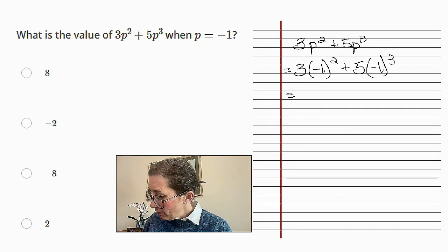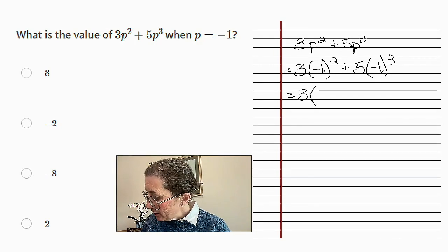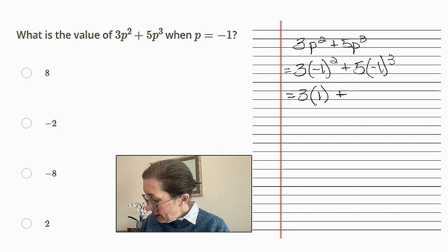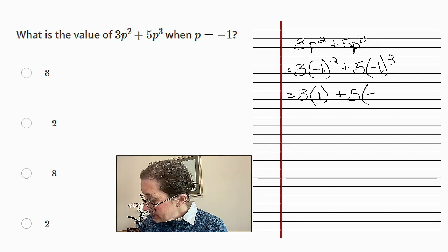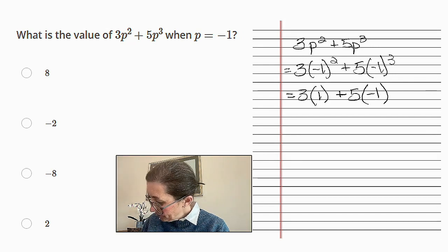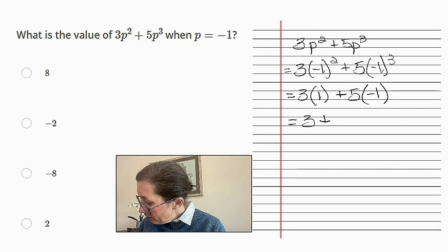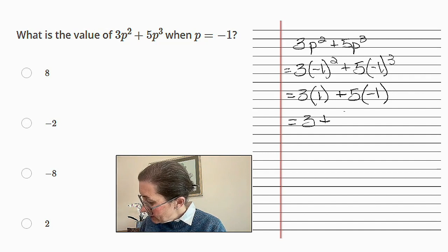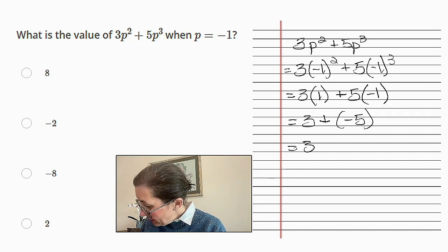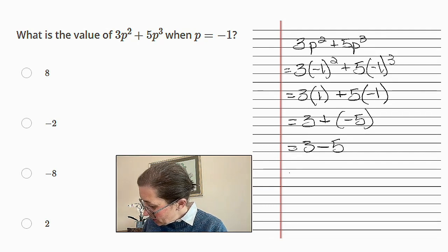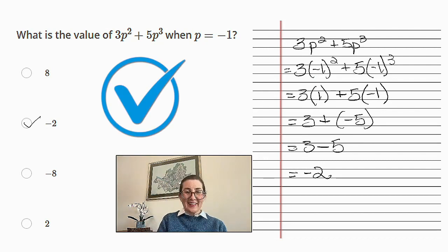We're going to solve the exponents first. So (-1)² is 1 and (-1)³ is -1. 3 times 1 is 3 plus 5 times -1 is -5. That is equal to 3 minus 5, which is equal to -2. And there you have it.